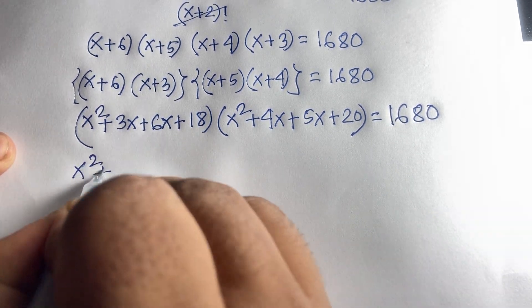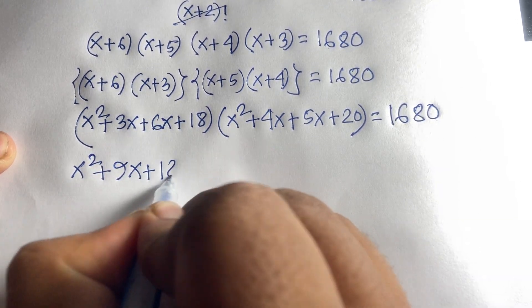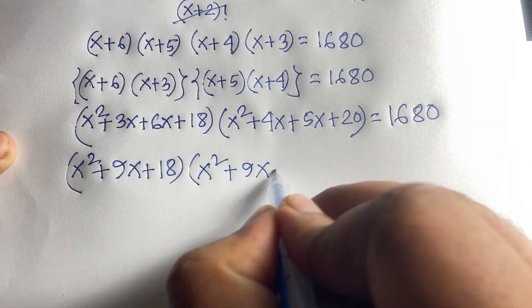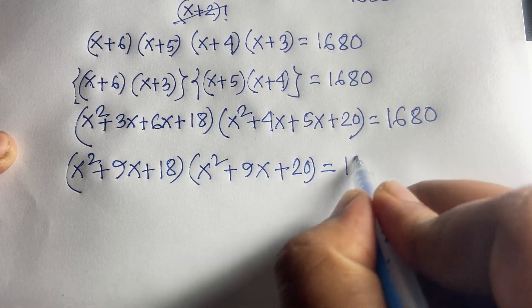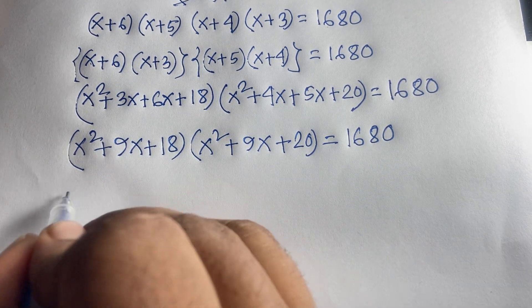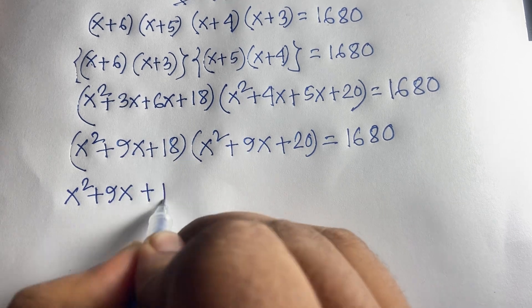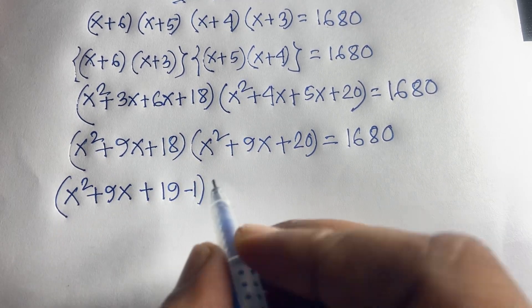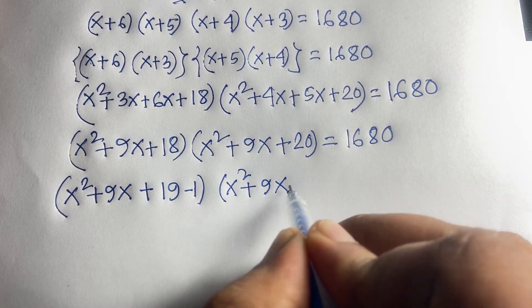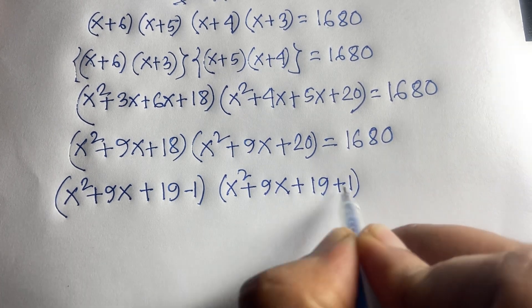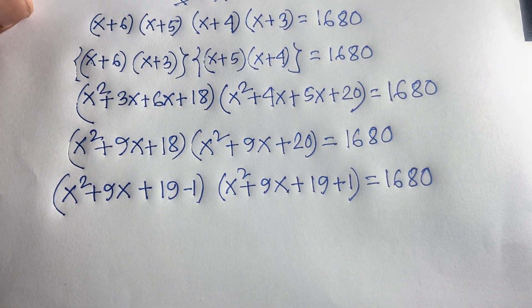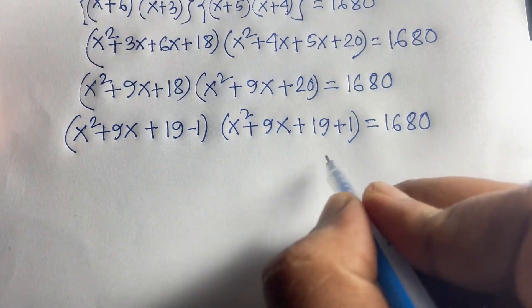We notice x²+9x+18 = (x²+9x+19) - 1 and x²+9x+20 = (x²+9x+19) + 1. So the equation becomes (x²+9x+19 - 1)(x²+9x+19 + 1) = 1680.